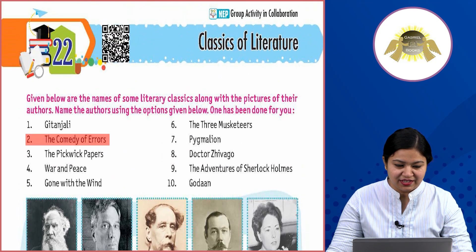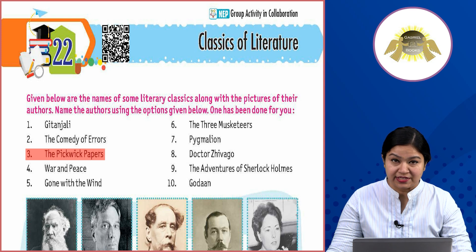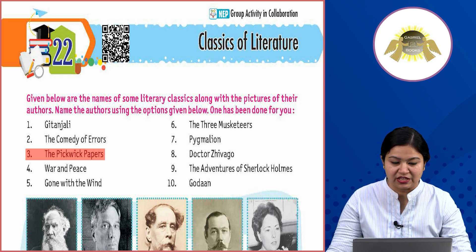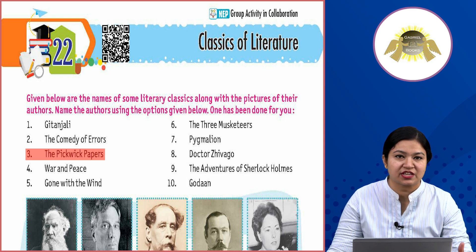The third picture — who wrote it? Charles Dickens wrote it. So in the third number, the picture is there, and below it you will write '3' and 'F' — that is already done. So that means in the third entry you need to write F for Charles Dickens.